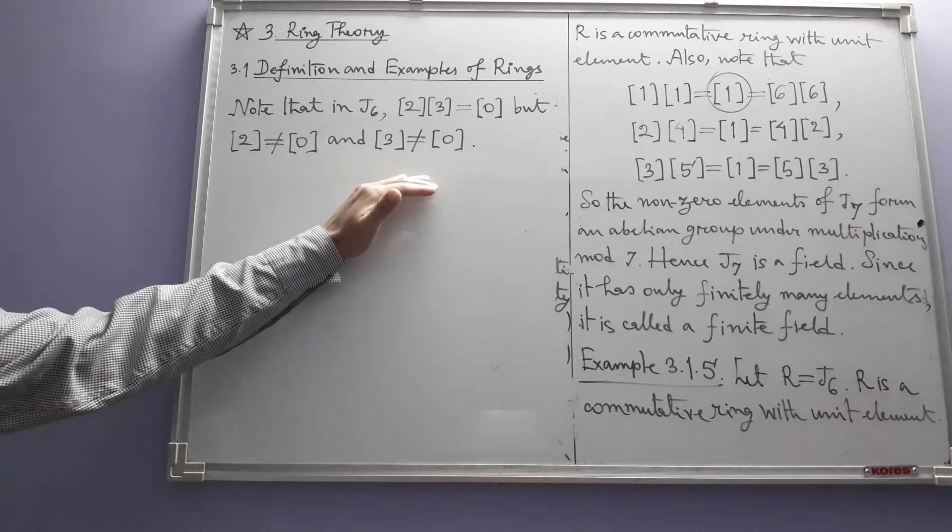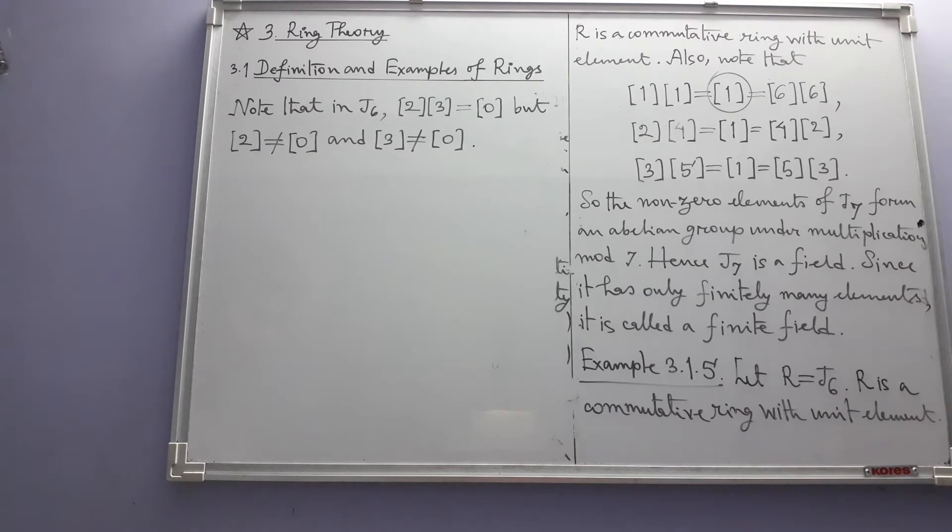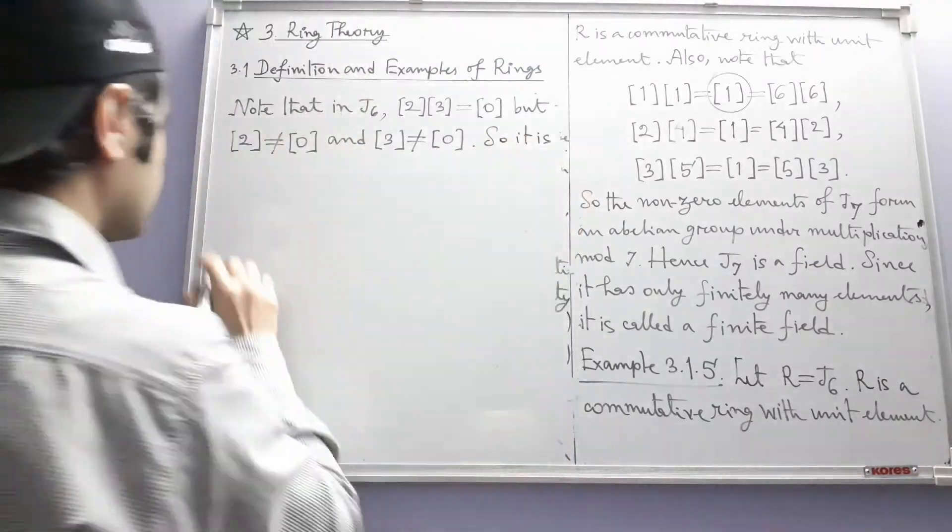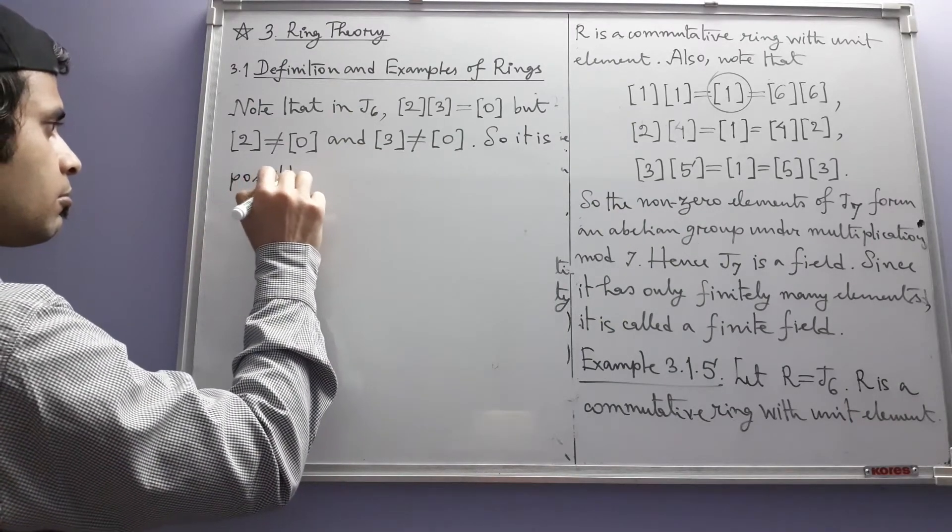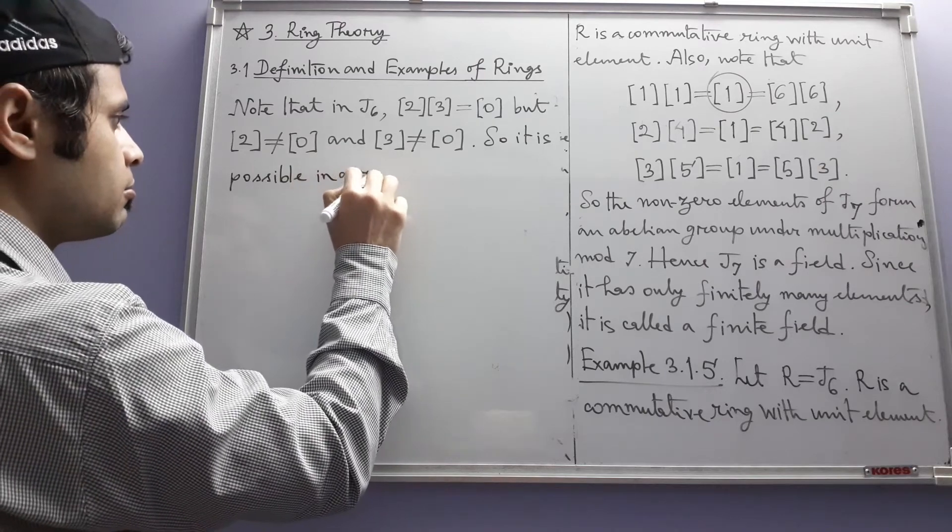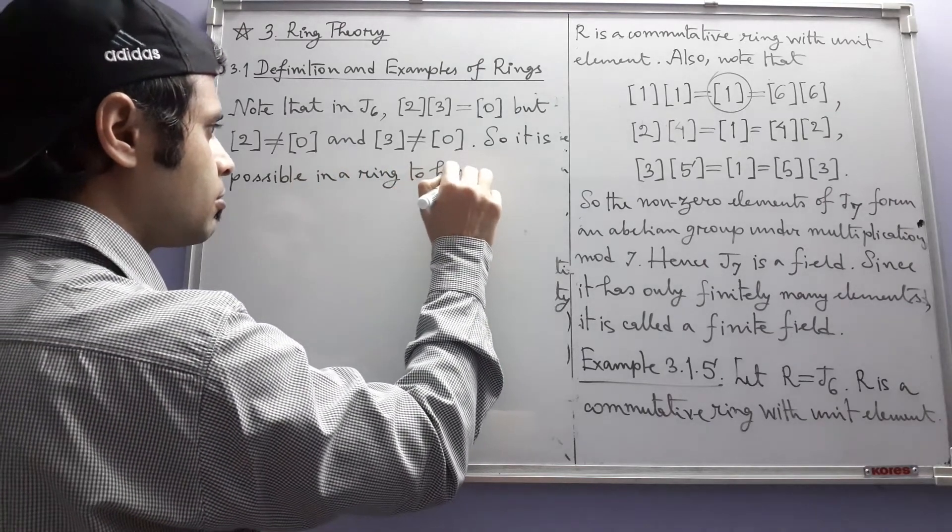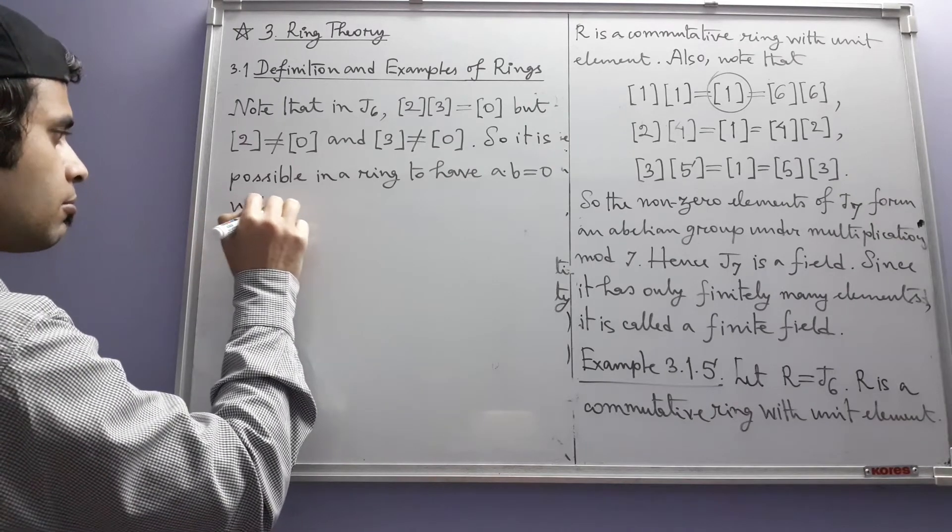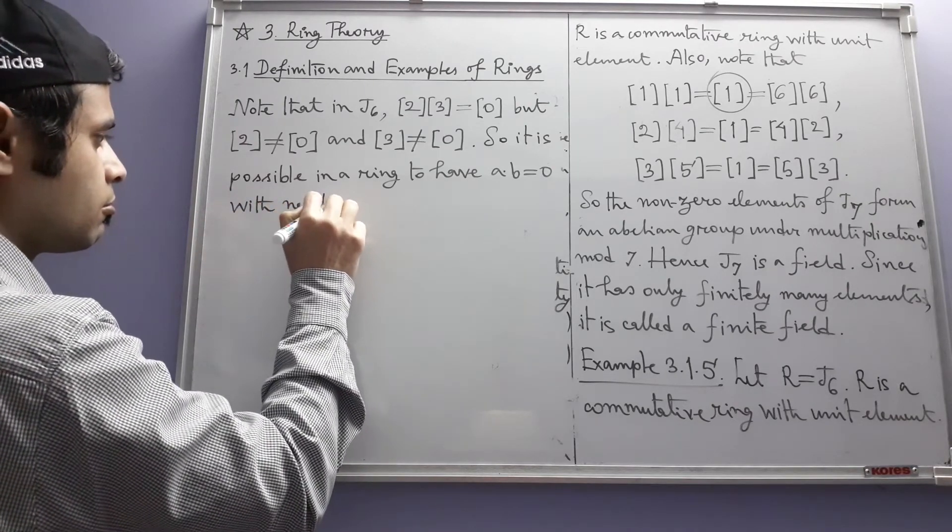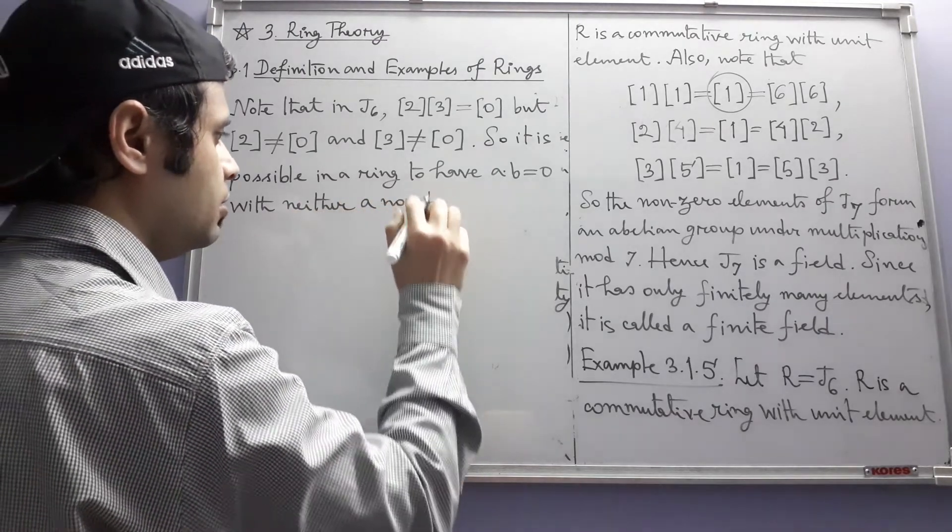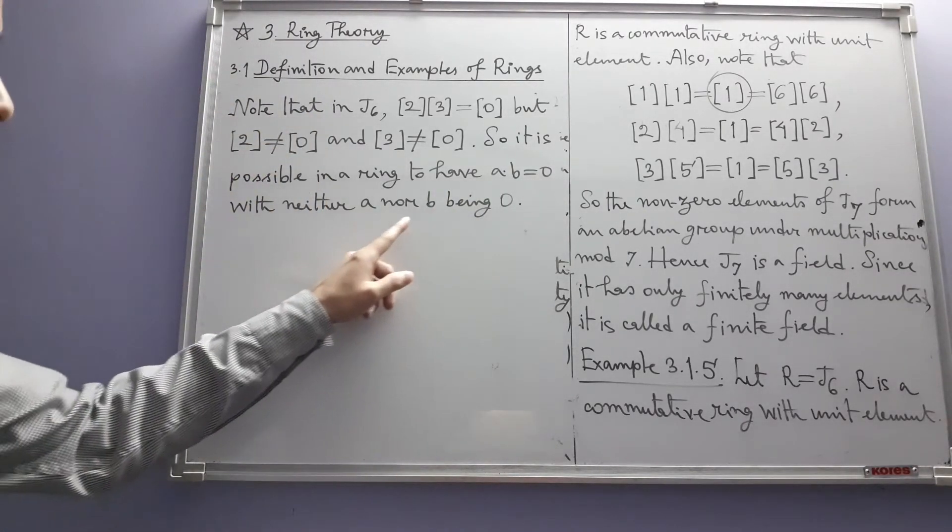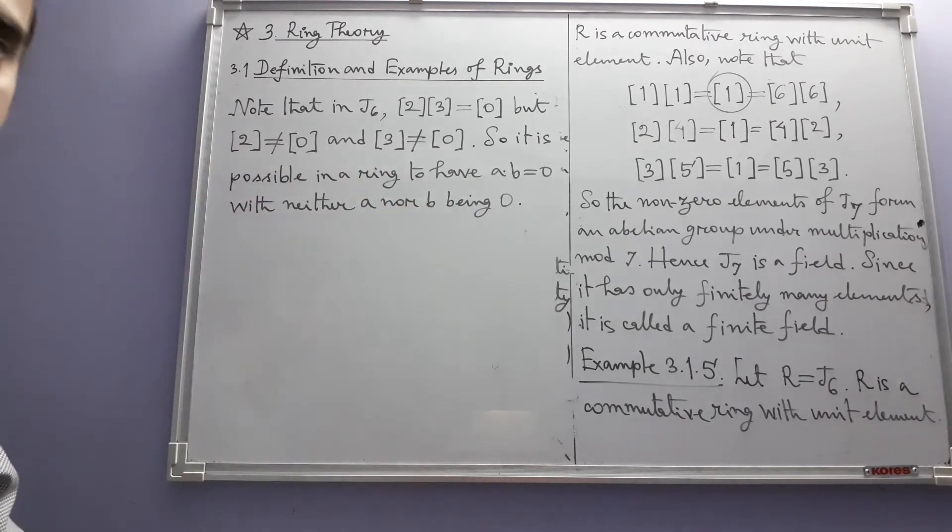So this peculiarity is not available in the system of integers or in the other systems with which we are familiar. So it is possible in a ring to have a dot b equal to zero, neither a nor b being zero.